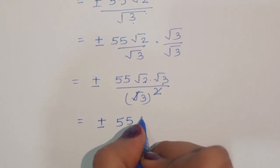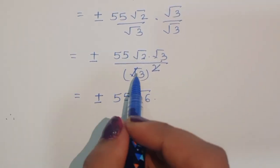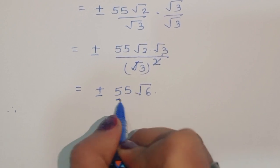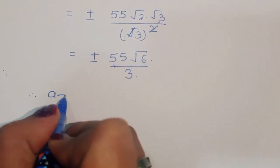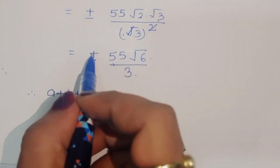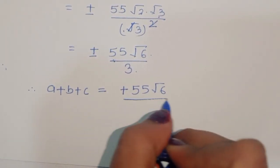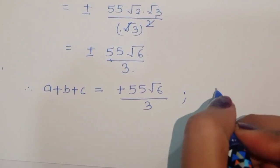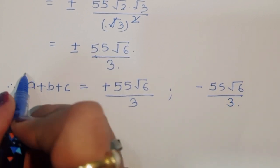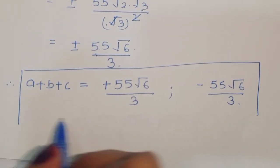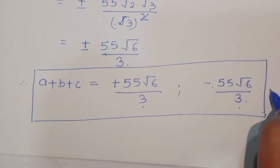Since 2 times 3 equals 6, we can write square root of 6. Therefore a plus b plus c equals plus or minus 55 times square root of 6 divided by 3. So we have two values: first one is plus 55 square root of 6 divided by 3, and the next one is minus 55 square root of 6 divided by 3. This is the solution. Thank you.